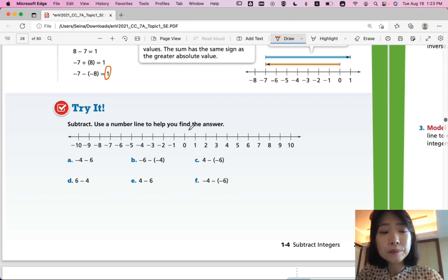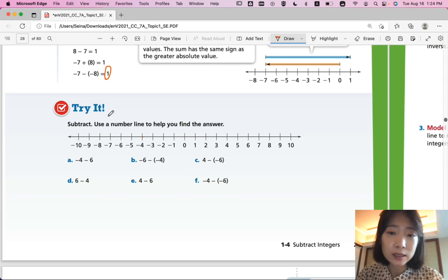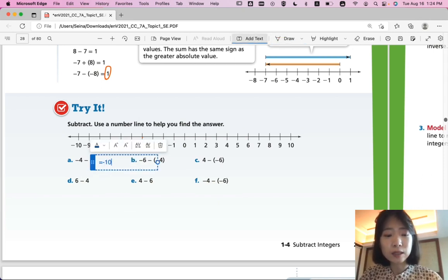Okay, are you ready? So, from negative 4, if you go 6 units to the left, you're subtracting 6. You go 1, 2, 3, 4, 5, 6. So, you end up with negative 10. So, this is equal to negative 10.